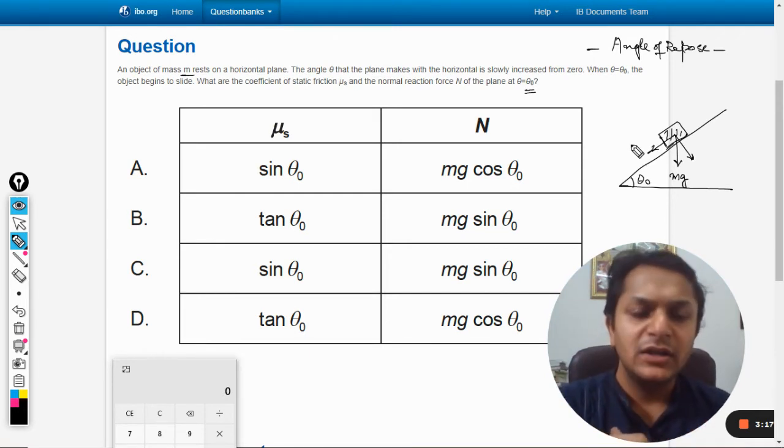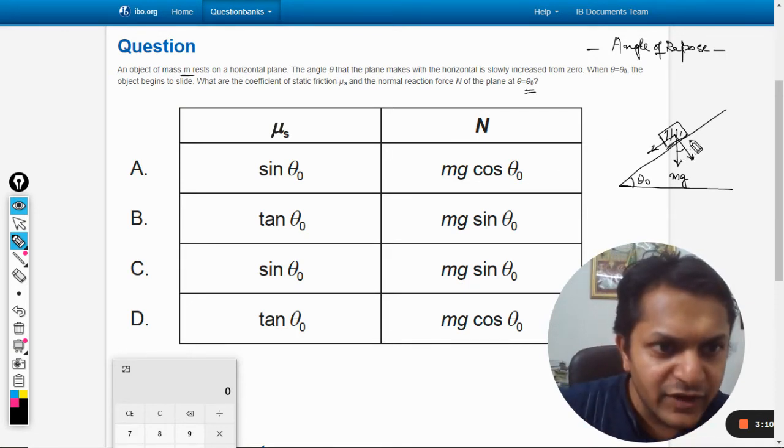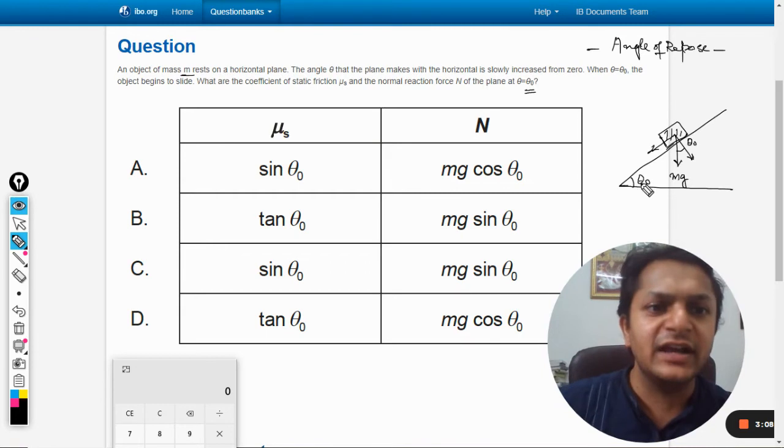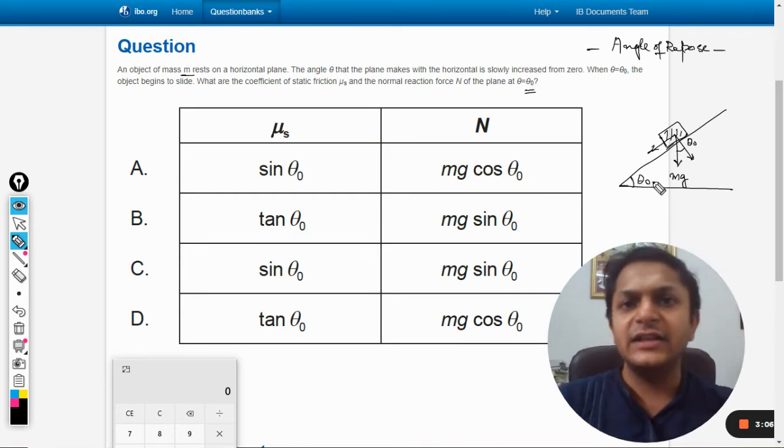It can be easily proved by using geometrical rules that this angle will also come out to be theta naught. This angle is equal to this angle, the angle that is made by the plane.